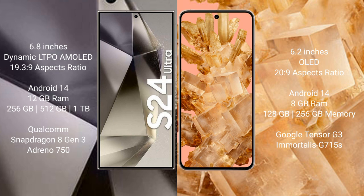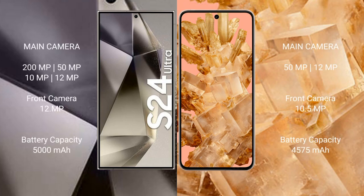Samsung Galaxy S24 Ultra features a Qualcomm Snapdragon 8 Gen 3 processor with Adreno 750 GPU. Google Pixel 8 comes with 8GB RAM and 128GB or 256GB internal storage, powered by a Google Tensor G3 processor with Mali-G715 GPU.